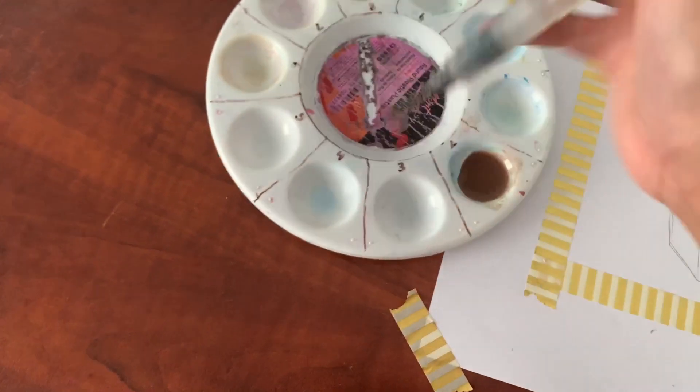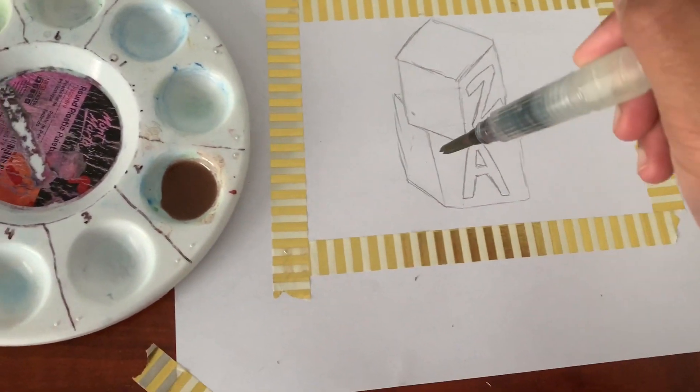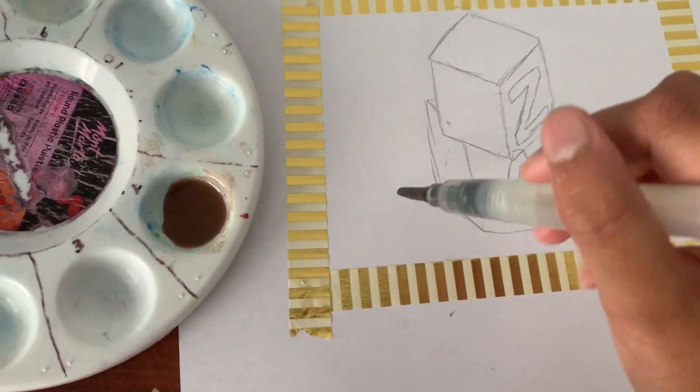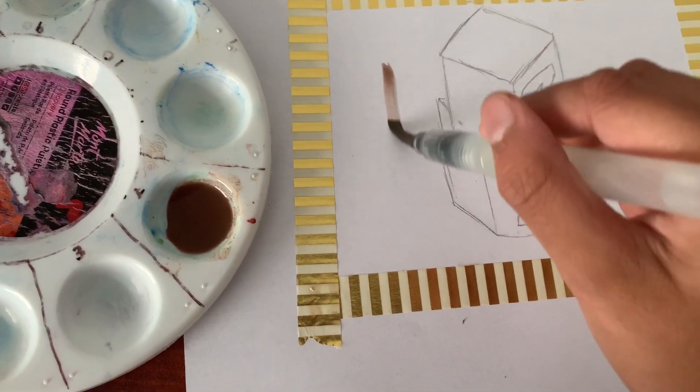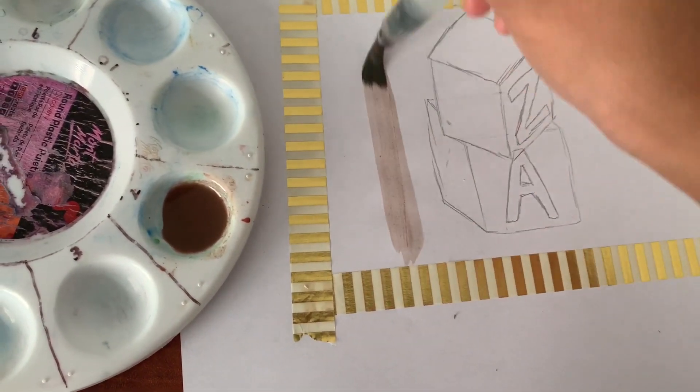So now I'm going to paint the background of the building blocks using that chocolatey color that I just created.